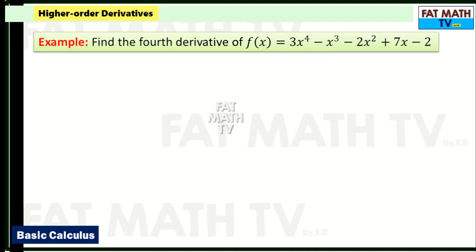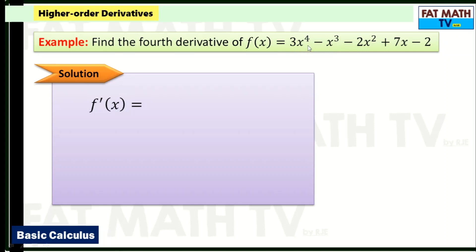Let's find the fourth derivative of f(x) = 3x⁴ - x³ - 2x² + 7x - 2. You need to be familiar with the rules of differentiation because we are applying them several times. The first derivative: the derivative of 3x⁴ is 12x³, the derivative of x³ is 3x², so we get 12x³ - 3x² - 4x + 7. If you haven't mastered this, go back to the previous videos on rules of differentiation.